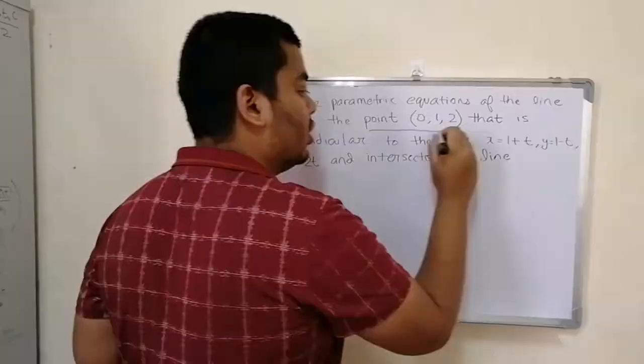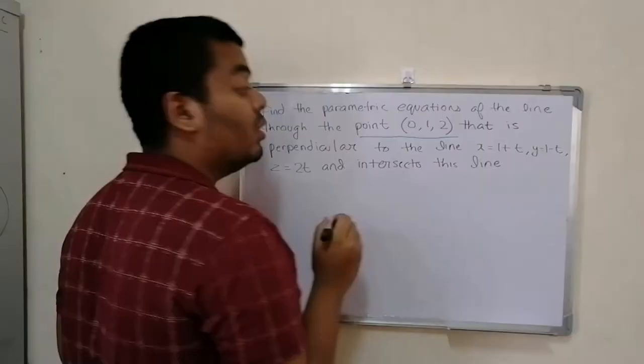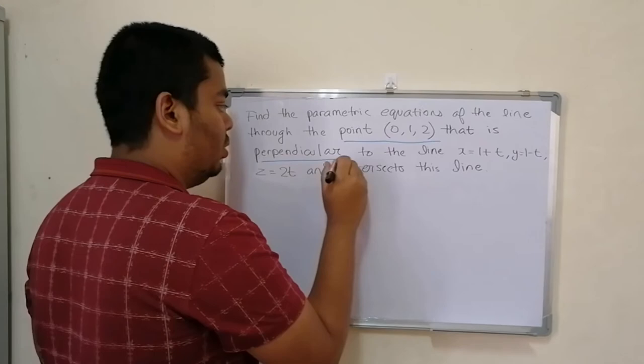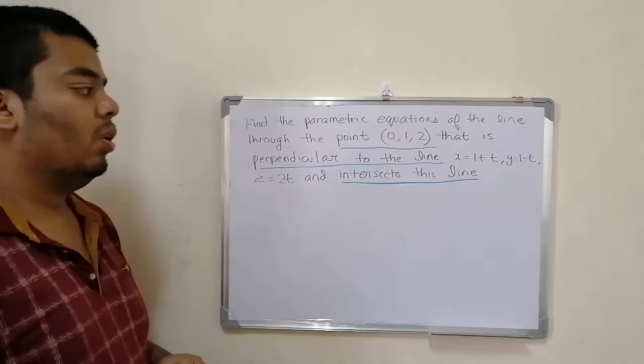There are actually three conditions we need to fulfill: it should pass through the point (0, 1, 2); it must be perpendicular to the given line; and it must intersect the given line. Three different conditions to fulfill.